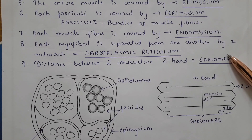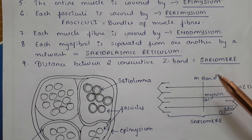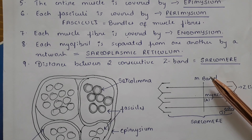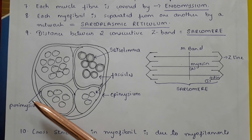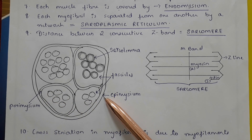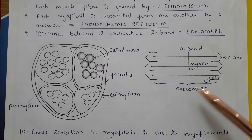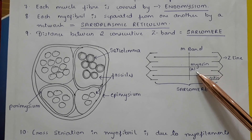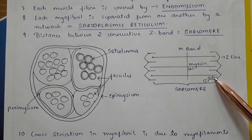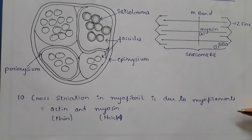Each myofibril is separated from one another by a network called the sarcoplasmic reticulum. The distance between two consecutive Z-bands is called the sarcomere. This diagram labels the perimyceum, the epimyceum, the muscle fascicles, the sarcolemma, the sarcomere, the M-band, the Z-line, and the myosin and actin filaments.